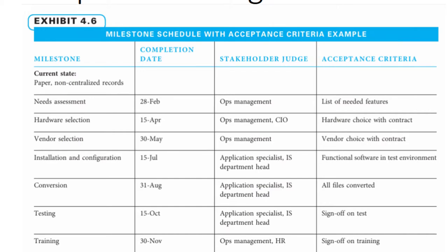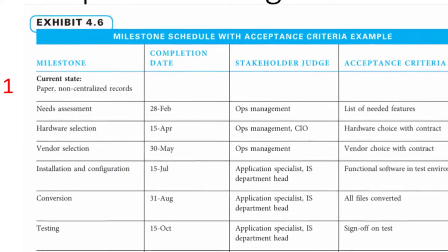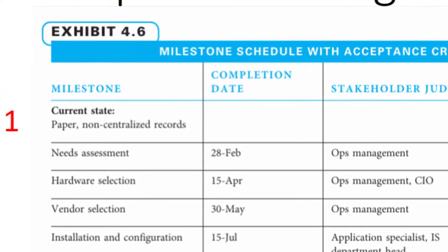In the first row, you describe the current situation that requires the project. This highlights and briefly sums up the problem — for example, something exists but doesn't work well, or a desire exists for something new. The description written in the schedule should be short but easy to understand.